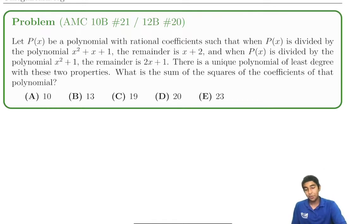Let P of x be a polynomial with rational coefficients, such that when P of x is divided by the polynomial x squared plus x plus 1, the remainder is x plus 2. What does that mean?